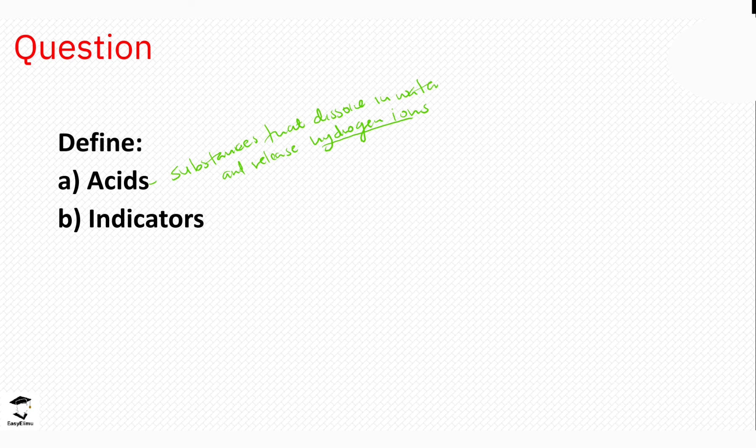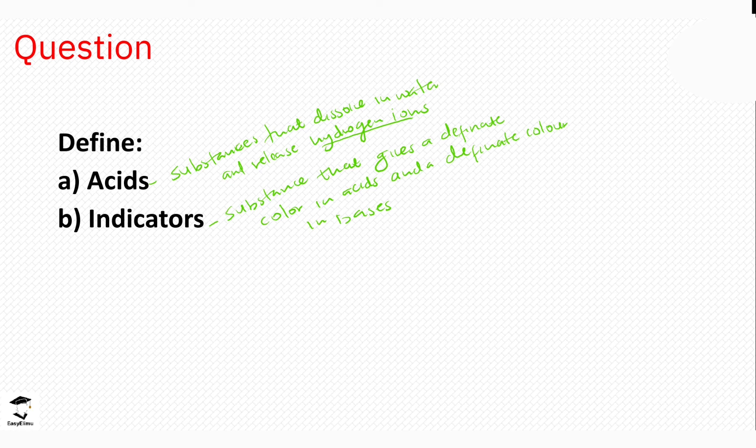Indicators are substances that give a definite color in acids and a definite color in bases, and they help us determine if a substance is an acid or a base. That's it for this session — that was just the introduction to acids, bases, and indicators. Next we'll be looking at simple acid-base indicators, so see you in the next session.